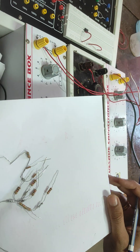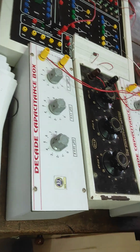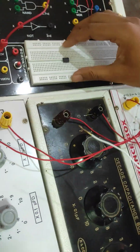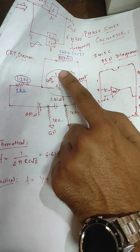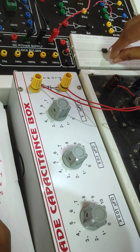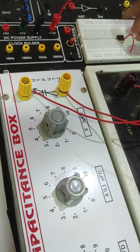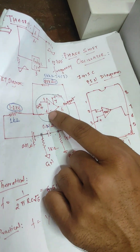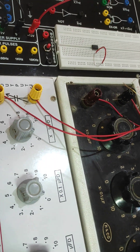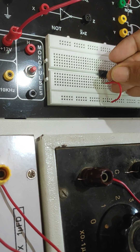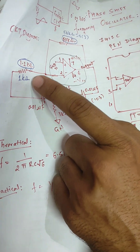We also need a dual oscilloscope. Now let us see the connections. As per the circuit, pin 3 (non-inverting input) is to be grounded. From pin 2 to pin 6 we connect the 56 kilo ohm feedback resistance.